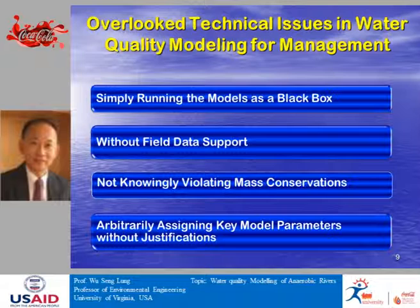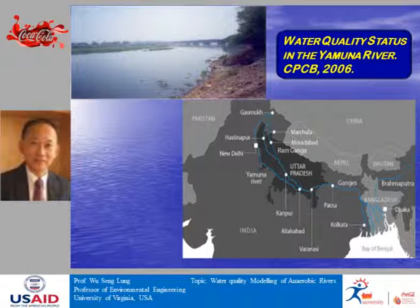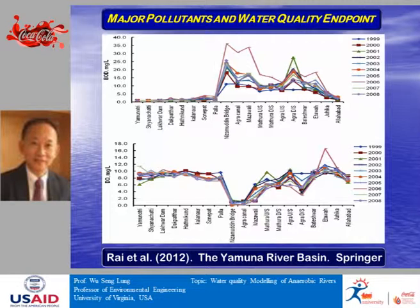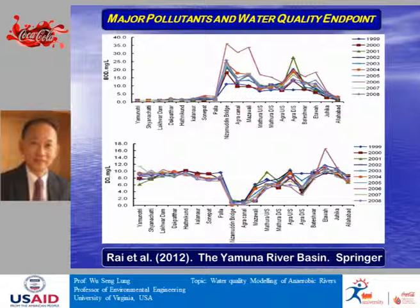Now let's turn attention to the Yamuna River in India. Our university has launched a study under a global initiative to study the Yamuna River, and I have been leading students in this effort. We obtained very good information online — the Central Pollution Control Board (CPCB) in India provided all the data publicly, without even needing to request it. This transparency is commendable.